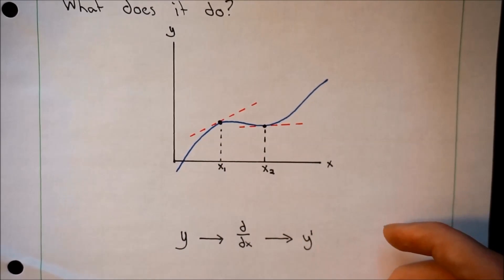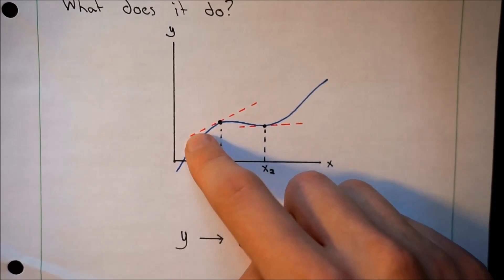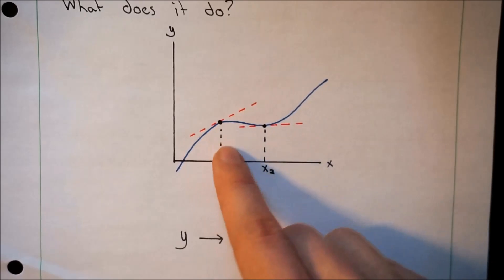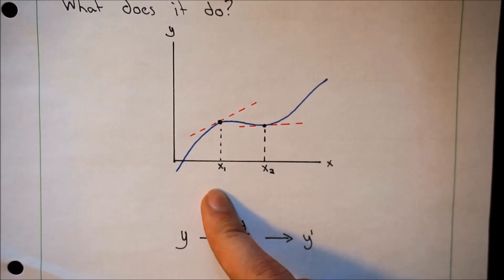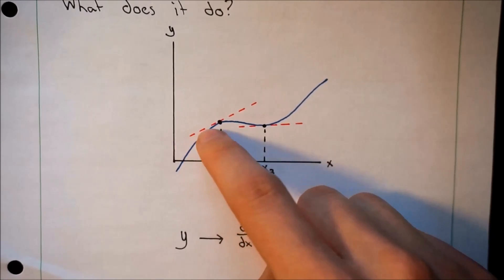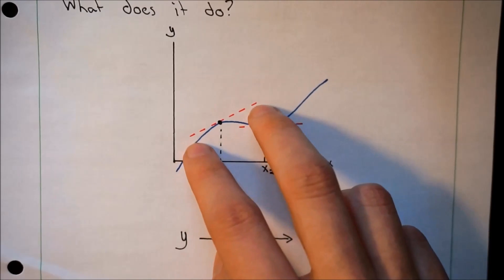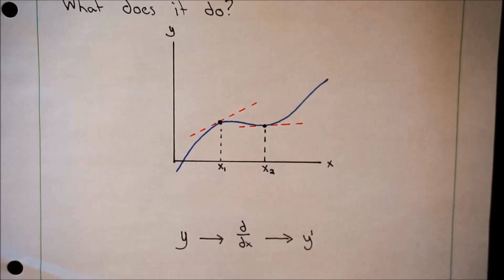Now, if you wanted to find the speed of that object at any one time, you would have to find the slope of the tangent line at that point. The old way of doing it would be to draw a tangent line like I have here, and then you would just measure the slope of this line to figure out how fast it's going.